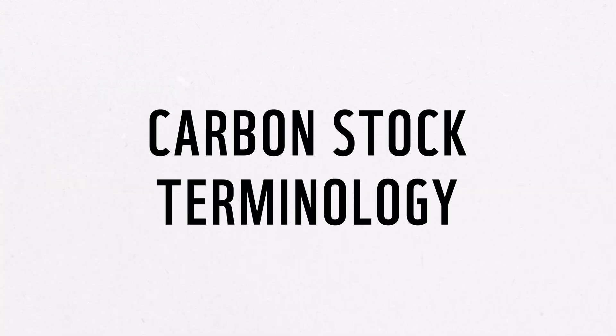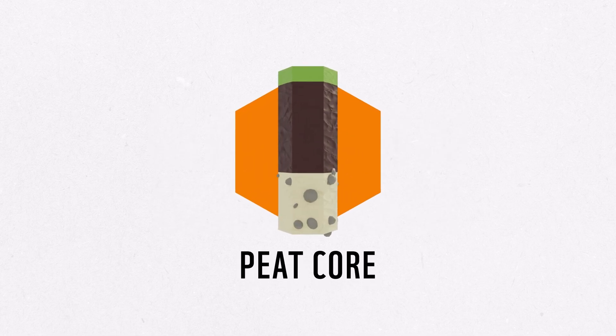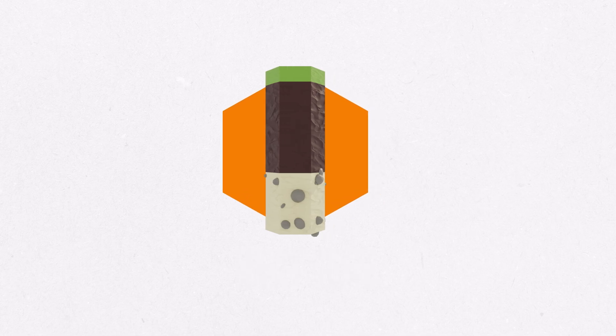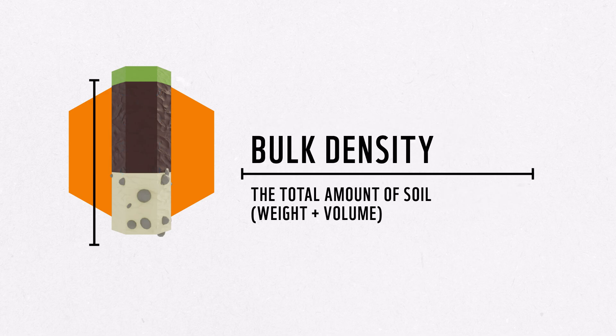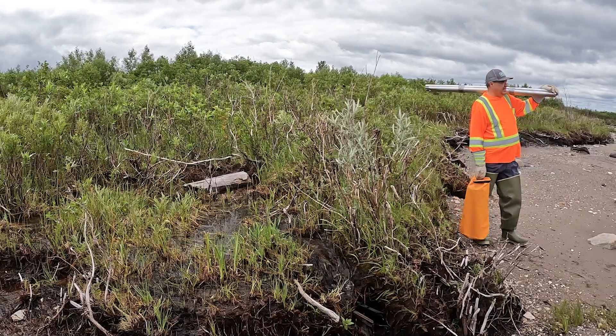Before we get into the fieldwork, let's review the terminology used and the measurements required to obtain carbon stock estimates from peat soils. The most common method for measuring the carbon stored by peat is by taking peat cores. Peat cores allow us to estimate the carbon content of the soil — in other words, the proportion of carbon in a sample — and the bulk density, or the total amount of soil.